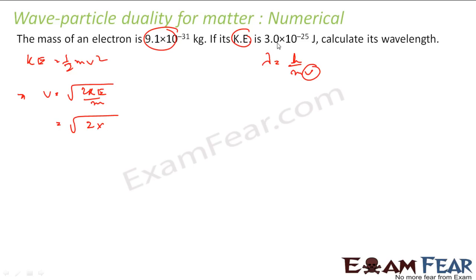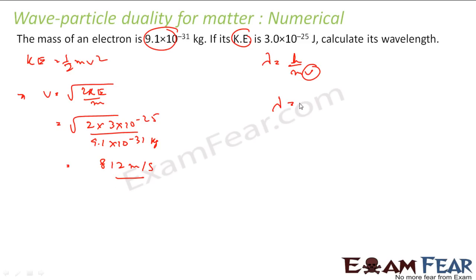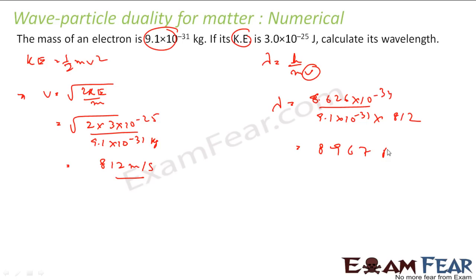Let us put the values: 2 × kinetic energy = 3×10⁻²⁵, mass = 9.1×10⁻³¹ kg. This comes out to be 812 m/s. Now I have the velocity and need to find λ. h = 6.626×10⁻³⁴ J·s, mass = 9.1×10⁻³¹ kg, velocity = 812 m/s. Solving this, you get 8967 Å — that is the wavelength.